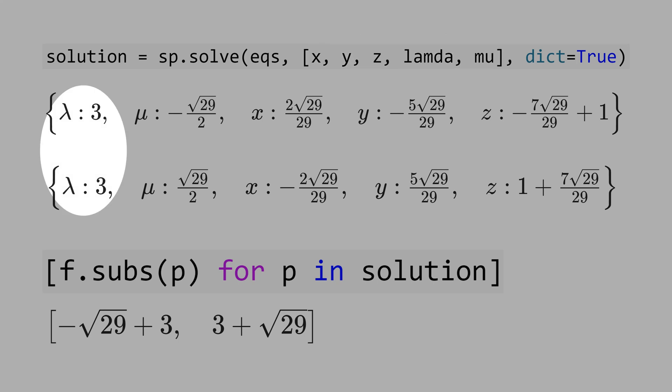We have two solutions, but for both solutions lambda equal 3. But mu is negative here, but in the other solution mu is positive.